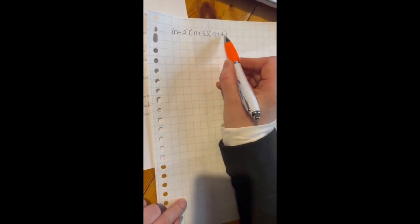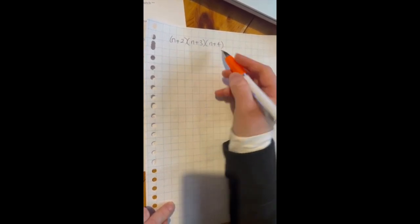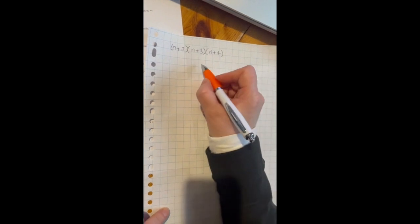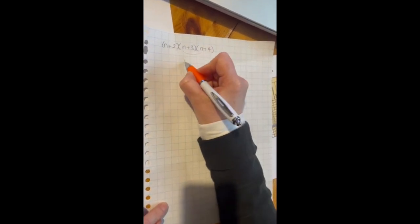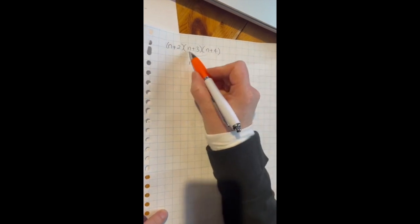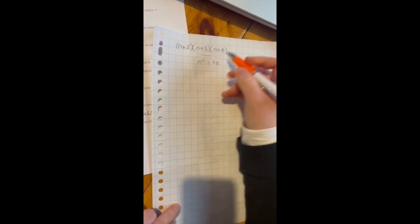And the 3 has to multiply by the 3 and the n and the 4 as well. So that's what those lines are. The first multiple that you do is multiply n by n which is n squared, multiply n by 4 which is plus 4n.